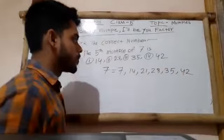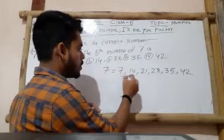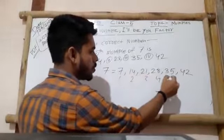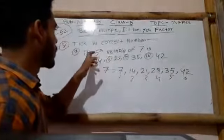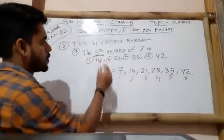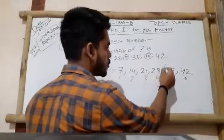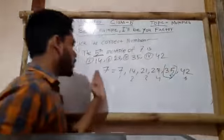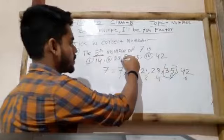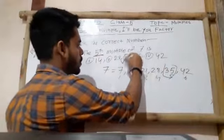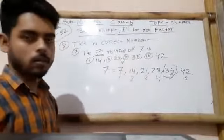These are the first six multiples of 7: 7, 14, 21, 28, 35, 42. But we need to determine the fifth multiple — that is 7, 14, 21, 28, 35 — this one. So the fifth multiple of 7 is 35. The correct answer is 35, which is option number 3.